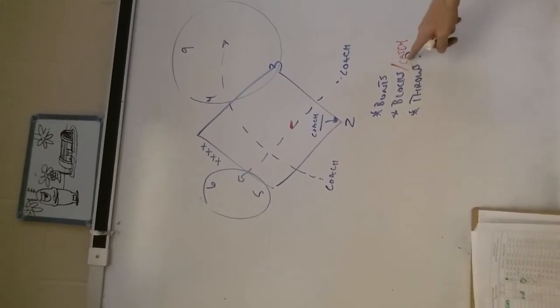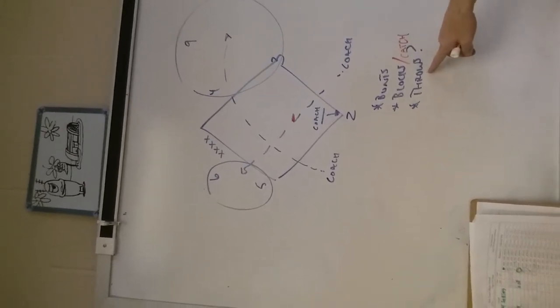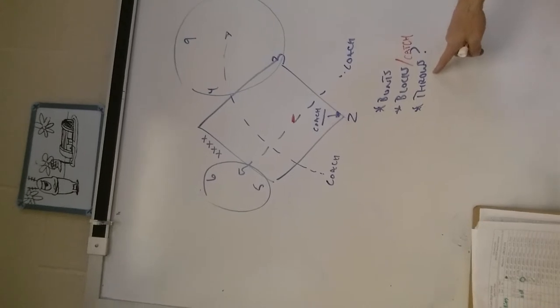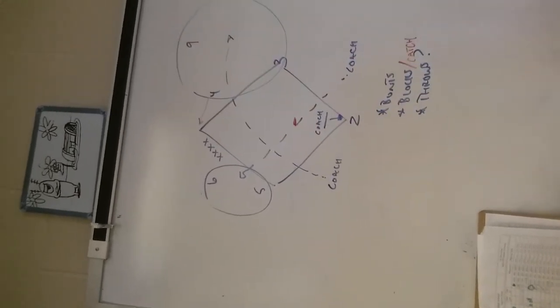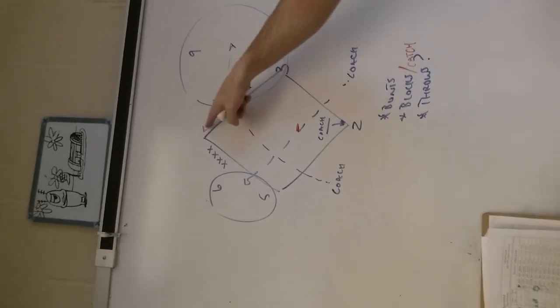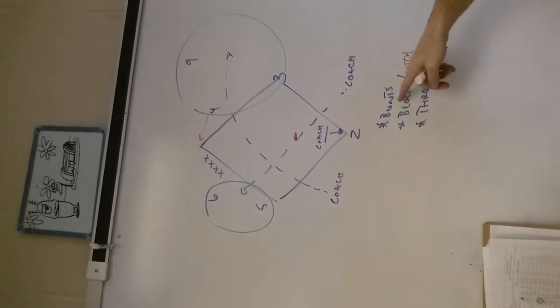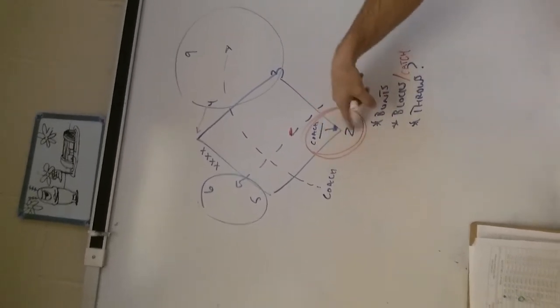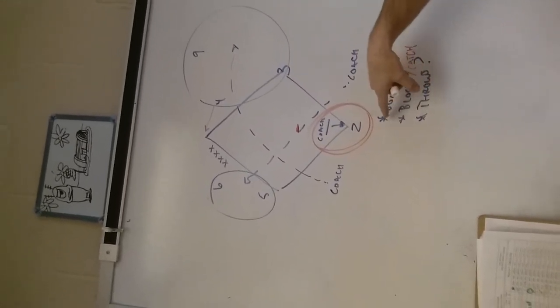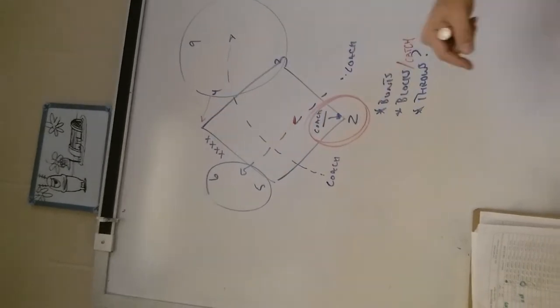We want to do blocks and catches. Then, if you're inclined, you could yell runner and have one of these second basemen cover the bag. As long as these second basemen know that you potentially could yell runner, then this coach and these catchers are working independently of everyone else with the lone exception of a runner call.